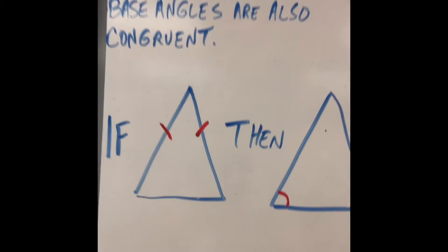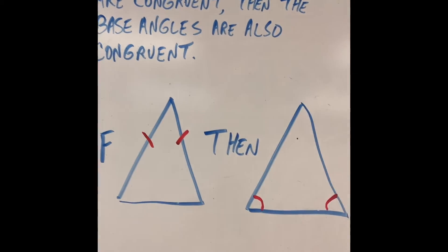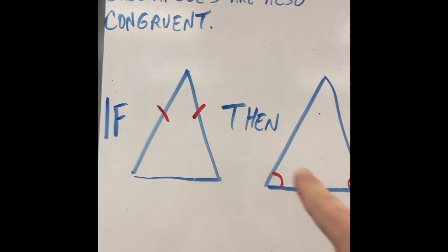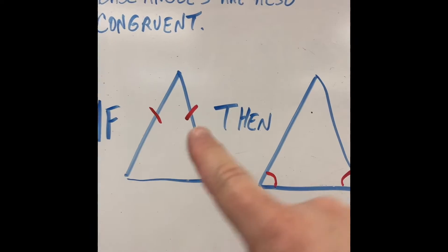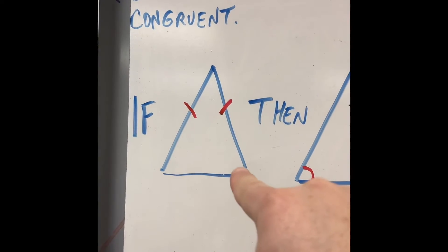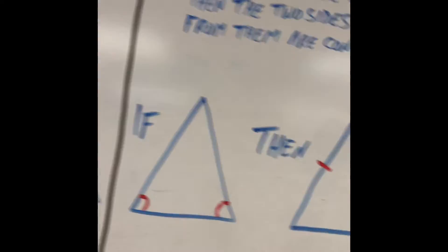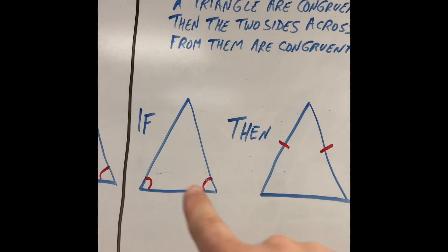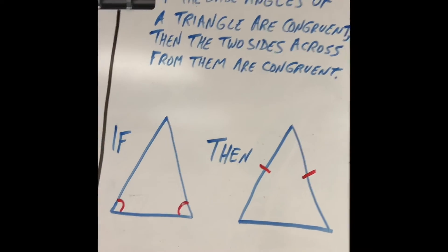In an isosceles triangle, if two sides are equal, then the base angles are equal. I call it if this, then that. These two angles are equal. The reverse is true. If these two angles are equal, then the sides are equal.